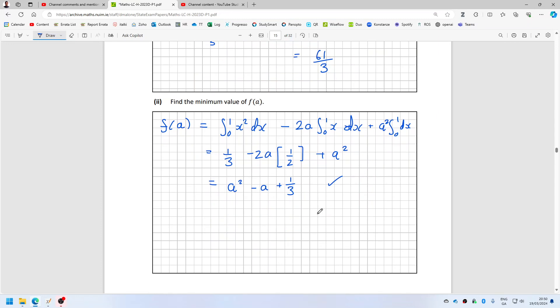So the minimum value of fa. So if I differentiate that, that would be two a minus one and that should equal zero. So that means a equals a half. So sub that back in.